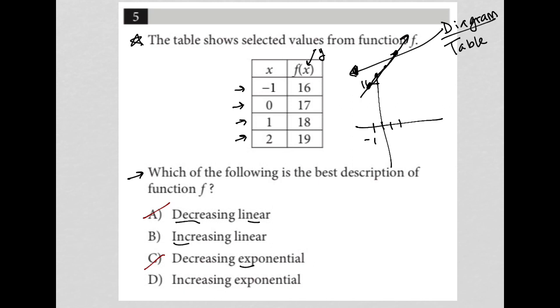And then in terms of linear or exponential. Well, linear, all linear graphs have a slope, a constant slope. A rise over run that is always the same. So it looks like we have that, because it looks like to get from this first point to the second point,